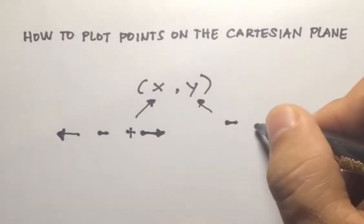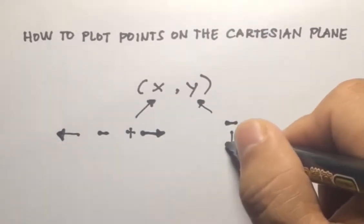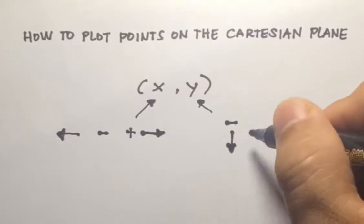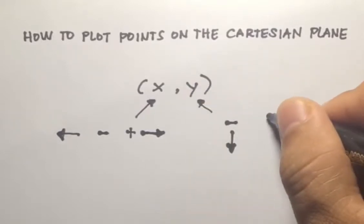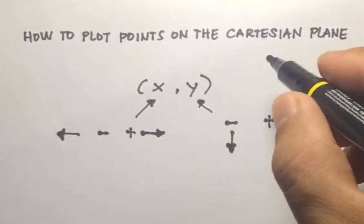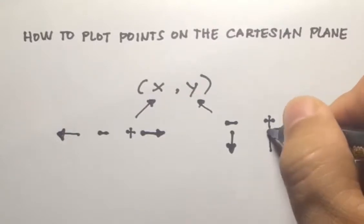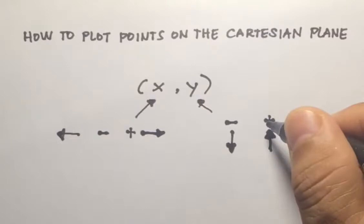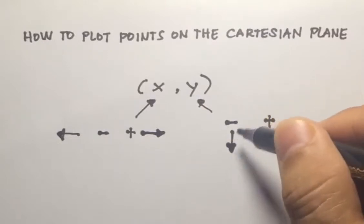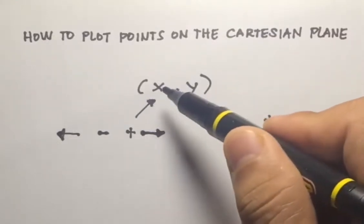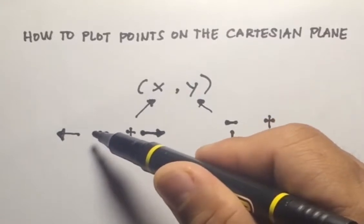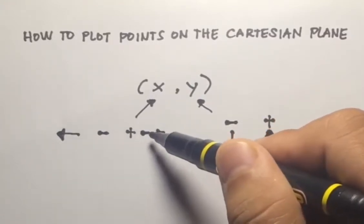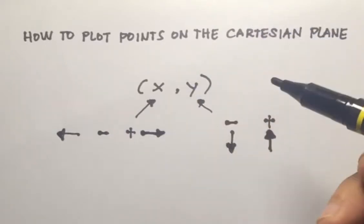Now for the Y value: if Y is negative, you move downward, and if Y is positive, you move upward. To recap: Y positive means move up, Y negative means move down; X negative means move left, X positive means move right.